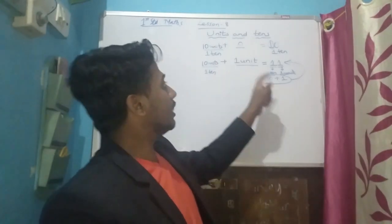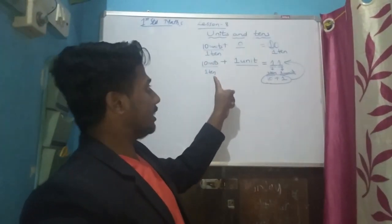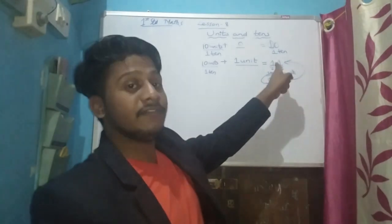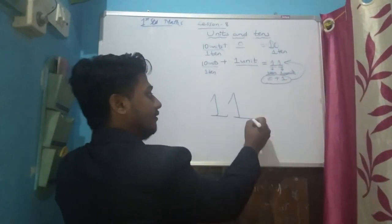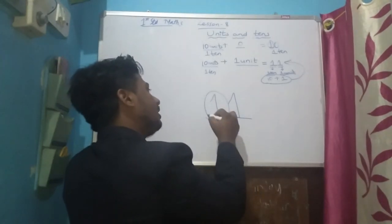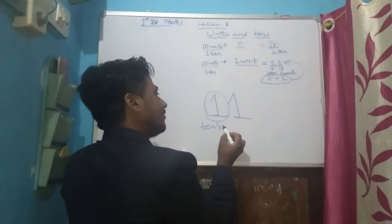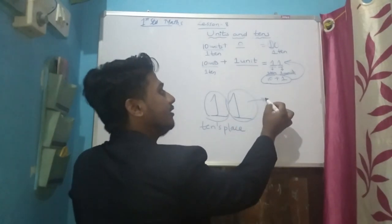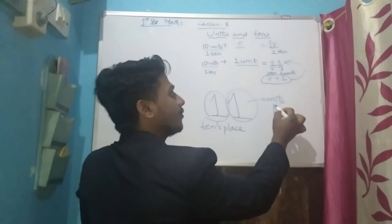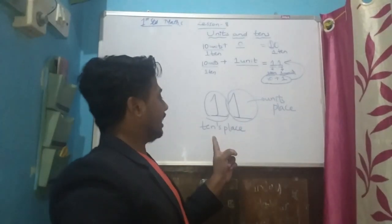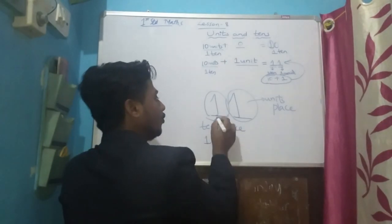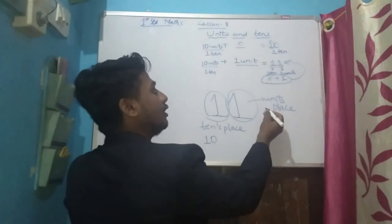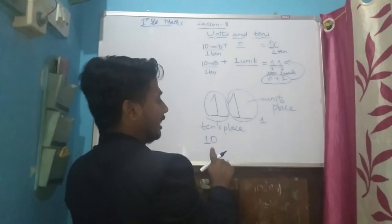Ten units means one ten. Ten plus one will be eleven. If I write eleven like this — in eleven, this one is at the tens place and this one is at the units place. Tens place means there is one ten, which is ten. There is only one unit, which is one. Ten plus one equals eleven.